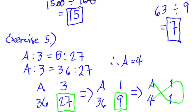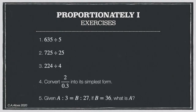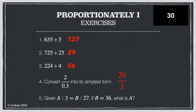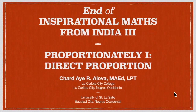So A equals 4. That's pretty much the end of our first topic: Proportionately 1, direct proportion. We'll see each other in the second topic in a while. Thank you, teachers, and see you soon.